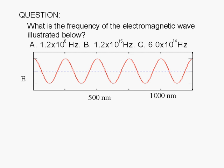What is the frequency of the electromagnetic wave illustrated below? a. 1.2 x 10⁶ Hz, b. 1.2 x 10¹⁴ Hz, or c. 6.0 x 10¹⁴ Hz.